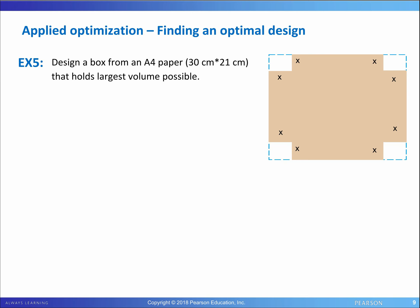In this video, we'll try to solve some applied optimization problems. Applied optimization problems are technically the same as finding min and max — same concept, same procedure. But there is a slight difference between them, and it's all about how the main function is given to you.